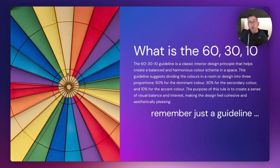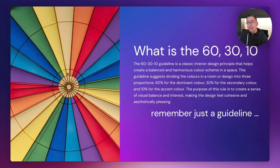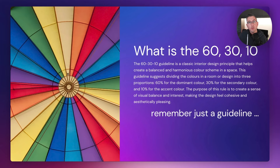The 30% will come in as a variation from that dominant color. For example, if you had a completely blue background, the 30% could be a variation of blue — a different shade — perhaps as a panel. Then the 10% is the accent color. This is where your attention needs to be drawn — maybe a button, like a bright green button — but you're not going to overdo it. It's for important elements of interest. I'll show you what that looks like from an interior designer's perspective.